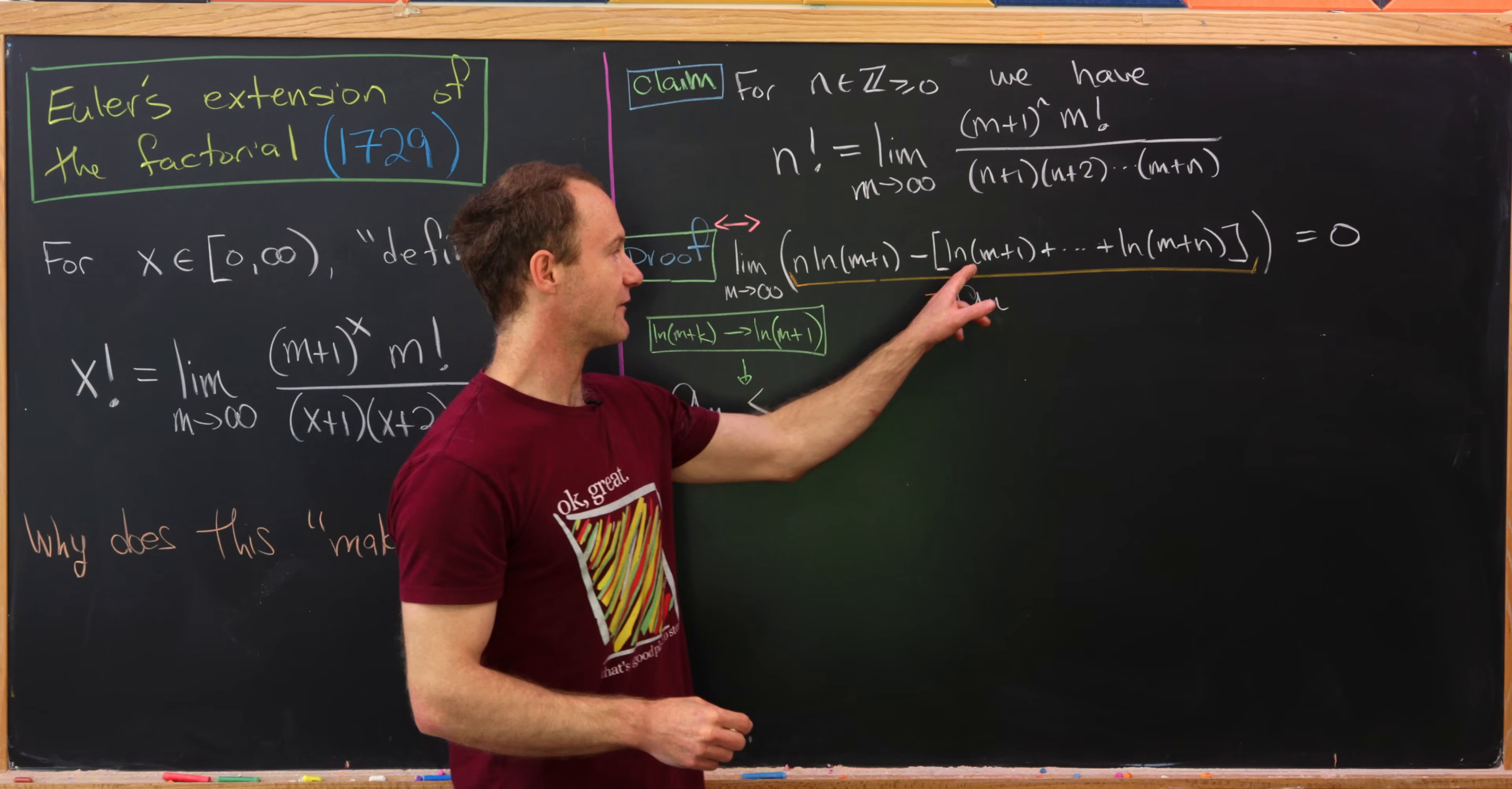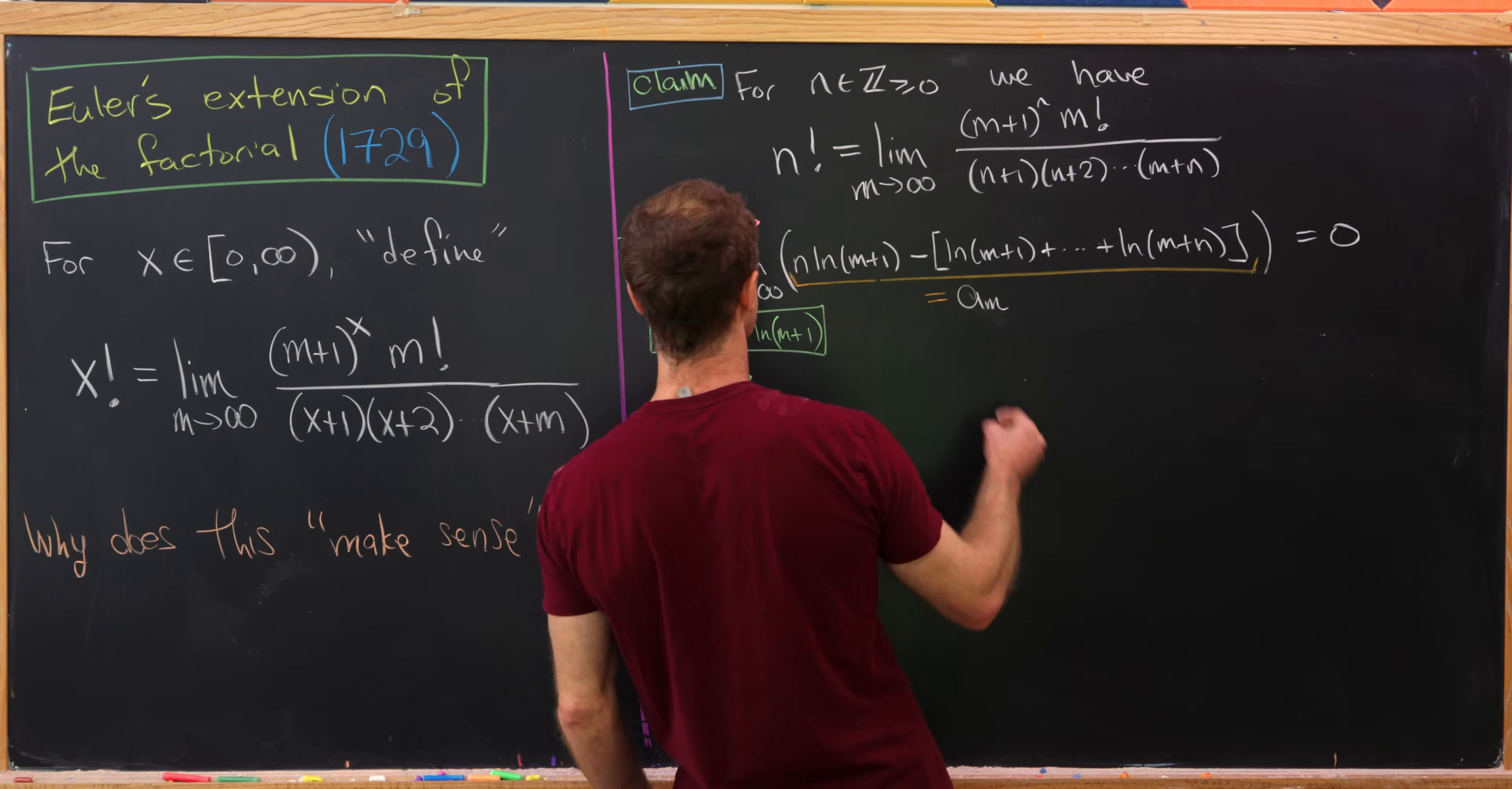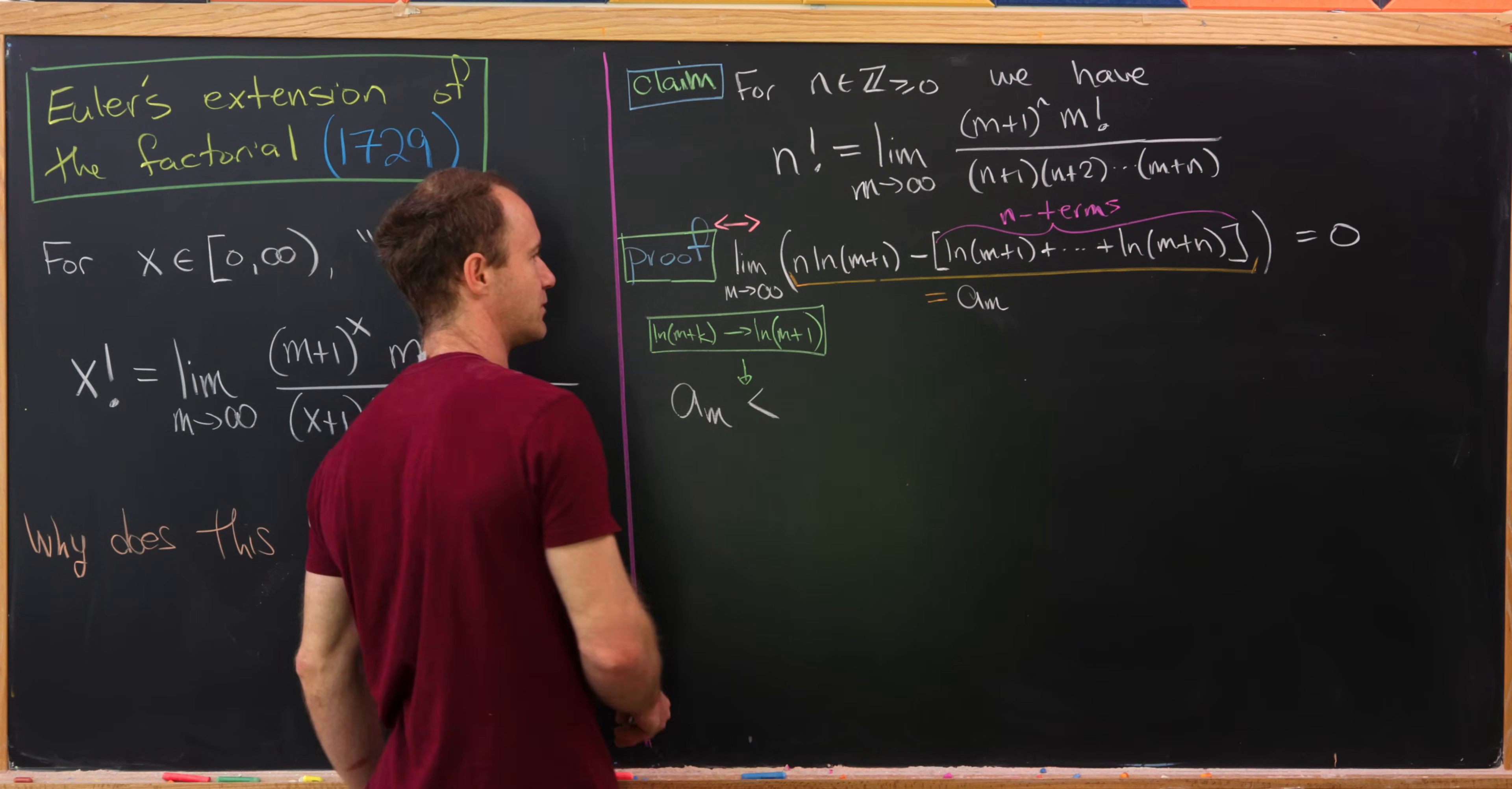So notice that's replacing everything except for ln(m+1) with something smaller. But then since that is being subtracted, we end up with something larger. Okay great. Then another thing that's probably pretty important to notice is how many terms are here. There are exactly n terms here. That's pretty easy to count I think. So that means we'll have n copies of ln(m+1).